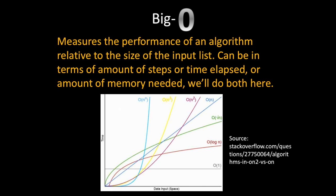When we analyze the performance of binary search we are going to use a notation called big O which will measure its performance relative to the size of the input list of values. So performance can be the number of steps or time elapsed or the amount of memory needed and we will do both here.